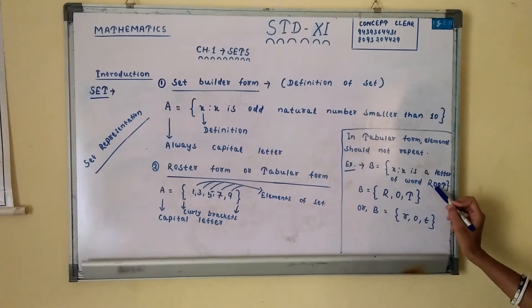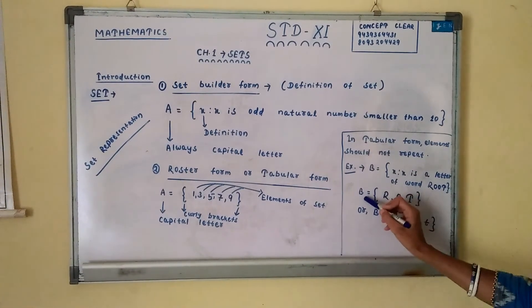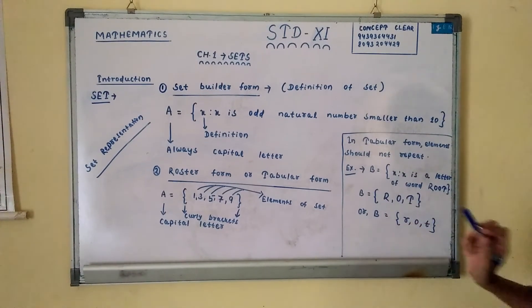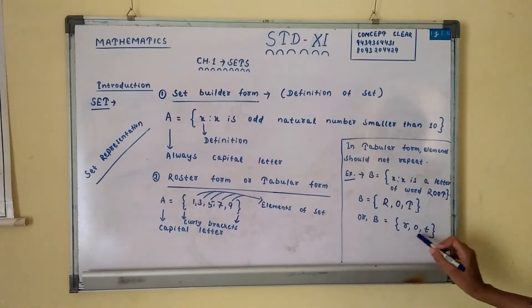In root, two o's are present. But in tabular form, r, o, t or in small letters r, o, t. In tabular form, elements do not repeat.